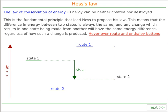Hess's law derives directly from the law of conservation of energy. This tells us that energy can be neither created nor destroyed. That means that if you were to go from one situation to another — for example, state 1 to state 2 — the energy change must always be the same regardless of which route you take to get there.